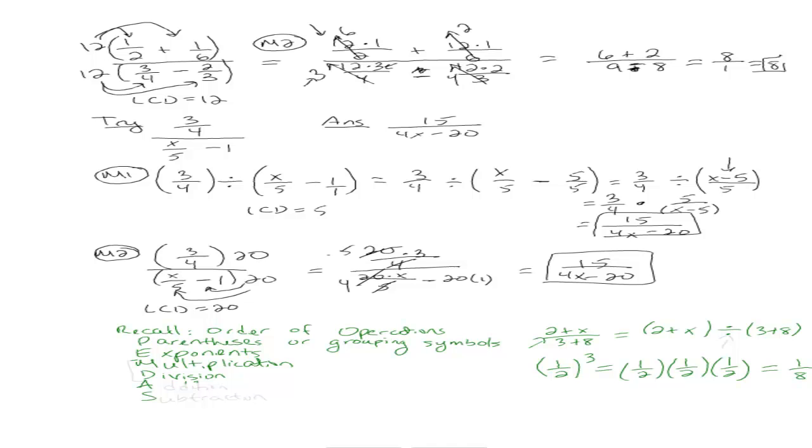So let's take a look at this example again. When we're looking at 2 plus x over 3 plus 8, we're going to treat the fraction bar as a division. So we're going to do it in the order that division comes in, which is after exponents if it comes before multiplication. And finally, addition or subtraction stays the same.